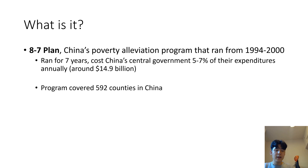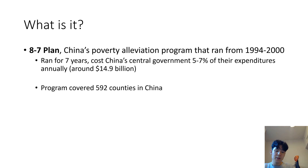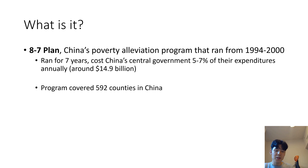In this research paper it is described as the 8-7 plan, which is a program that ran from 1994 to 2000. It cost the government about five to seven percent of their annual expenditures and it covered 592 counties in China. It was aimed to reduce poverty in these specific locations.